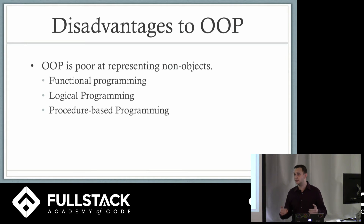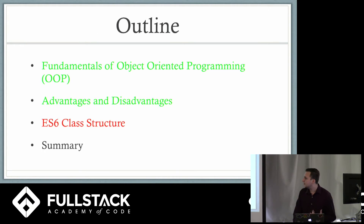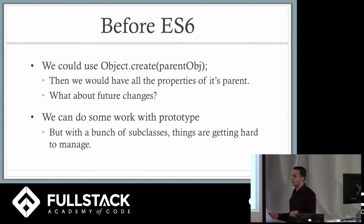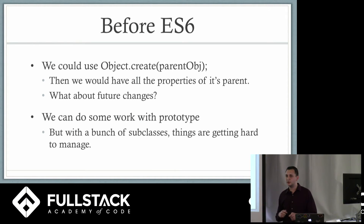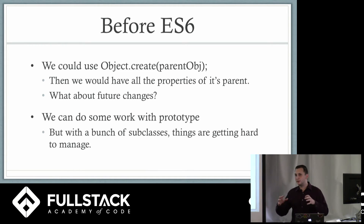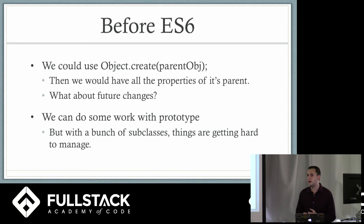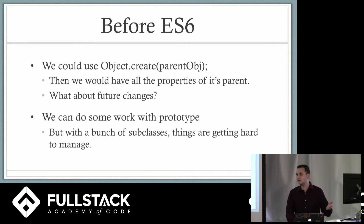With that said, what does ES6 bring? Before ES6, we used object.create with a parent object to get all the parent's properties. But if we changed properties or methods on the original object after the fact, the child wouldn't have those updates — unless we aligned the prototype, which lets us get those changes. But with a whole bunch of subclasses, things get hard to manage. We can imagine a better structure for going down the ladder, especially with 10 or more subclasses.